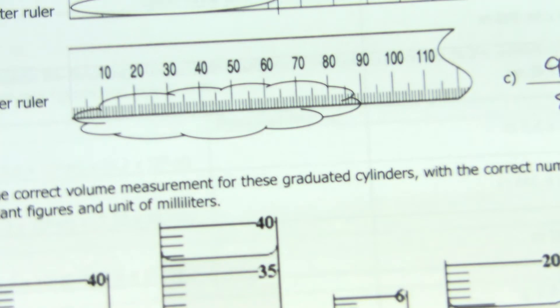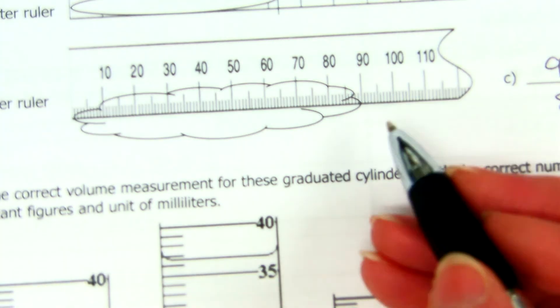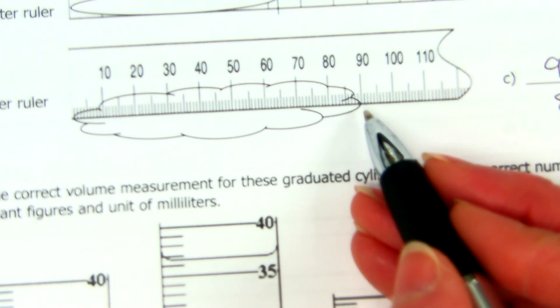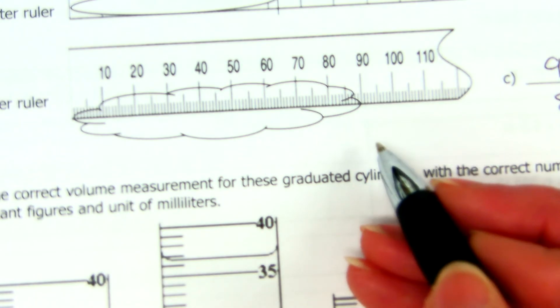We have to go out past the tenths. So, we look at this carefully, and when you look at it closely, what's your best guess? Is it between 89.9 and 90, or is it between 90 and 90.1? What's your best guess?